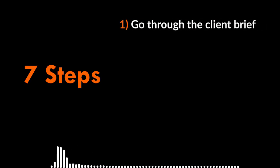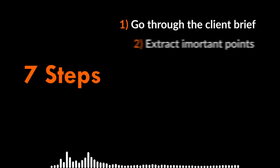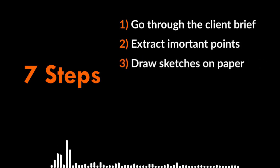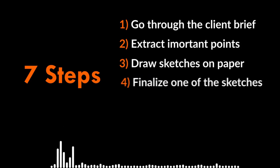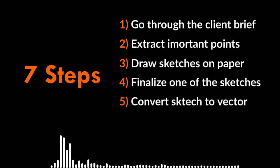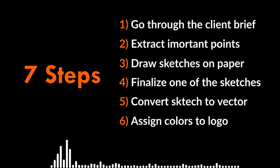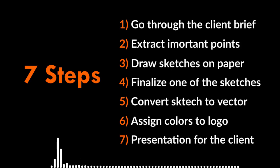For the purpose of ease, I have divided this tutorial into seven steps. In step one we will go through the client brief. In step two we will extract the major points from the given brief. In step three we will draw sketches on paper. In the fourth step we will finalize one or two sketches. In the fifth step we will convert our sketch into vector using software like Adobe Illustrator, CorelDRAW, or Inkscape. In the sixth step we will assign colors to enhance visual impact, and finally in step seven we will make a presentation for the client.